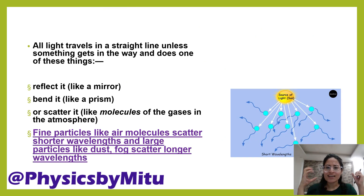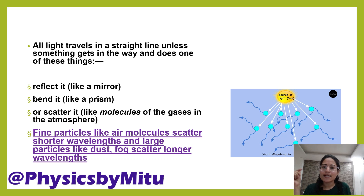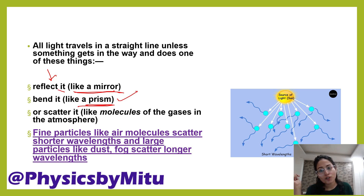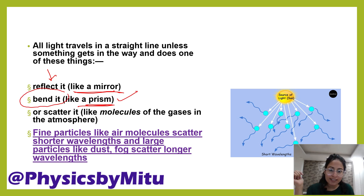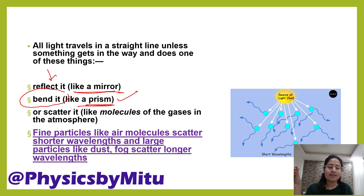Light travels in a straight line unless something gets in the way. For example, if there is a mirror, light will be reflected. If there is a prism, light will be refracted because the medium has changed and the speed of light changes. If there is a particle in the path of light, the light will be scattered.